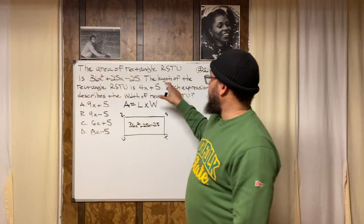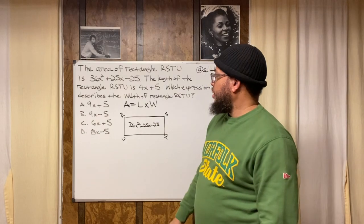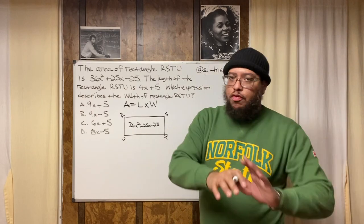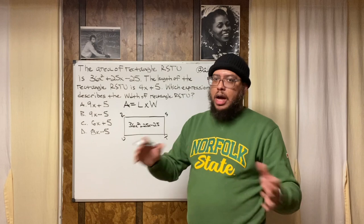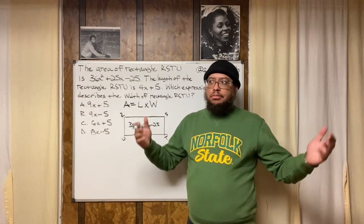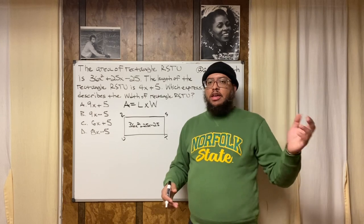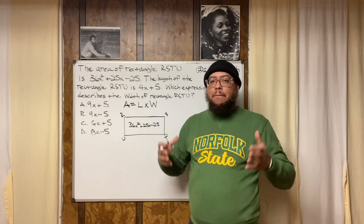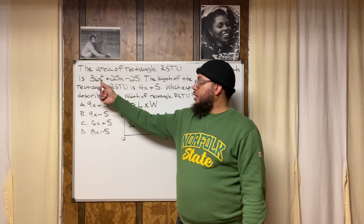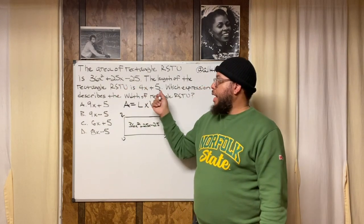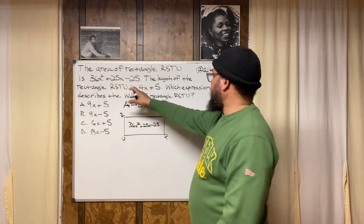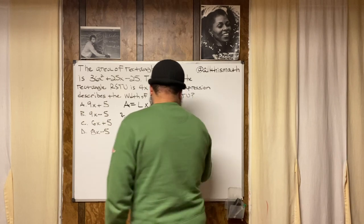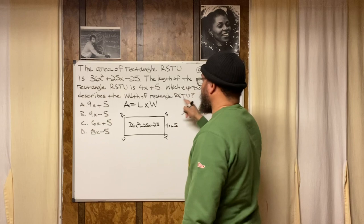We also know the length is 4x + 5. Usually in rectangle area problems the area is just a number, no polynomials — maybe 58 square meters with a length of 22 meters. But the same principles apply even when you're dealing with a trinomial and a binomial. I'll label the length as 4x + 5, and the width is what I don't know.